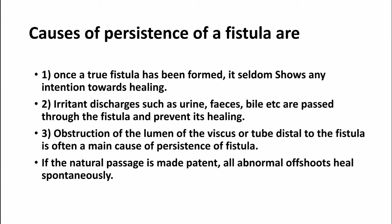Causes of persistence of a fistula: 1. Once a true fistula has been formed, it seldom shows any tendency towards healing. 2. Irritant discharges such as urine, feces, and bile passing through the fistula prevent its healing. 3. Obstruction of the lumen of the viscus or tube distal to the fistula is often the main cause of resistance. If the natural passage is made patent, all abnormal offshoots heal spontaneously.